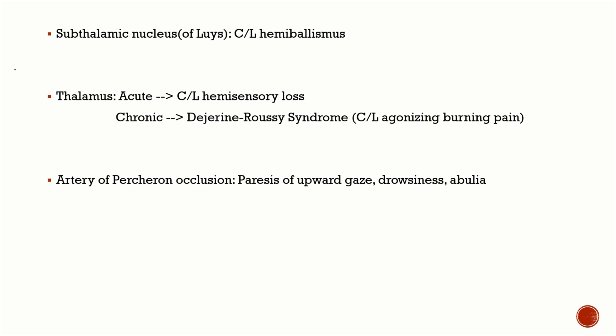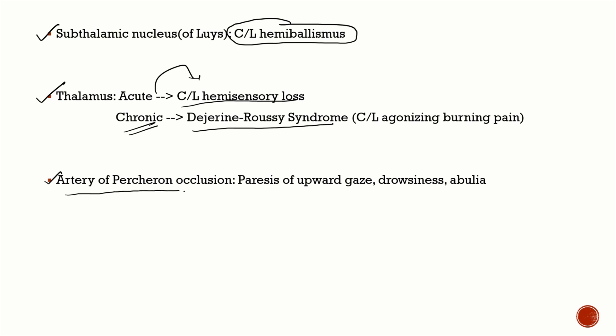Other P1 stroke syndromes include contralateral hemiballismus from subthalamic nucleus of Luys involvement. Thalamic infarction causes acute contralateral hemisensory loss, and in the chronic stage, severe contralateral agonizing burning pain — known as Dejerine-Roussy syndrome. In artery of Percheron occlusion, a single branch supplies all P1 structures bilaterally, causing upward gaze palsy, drowsiness, and abulia with altered level of consciousness.